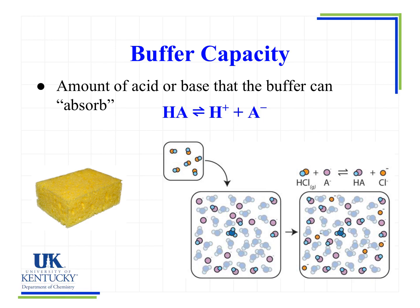Buffers can only do so much, and we have something called buffer capacity. Think of it like a sponge on the counter — you pour a little water on it and it soaks it up, and more and more, until at some point the sponge cannot absorb any more water, and if you pour more after that, it just runs all over the counter. There is a limit to what a buffer can do. If a system gets so overwhelmed, it can no longer function as a buffer. It's meant to maintain pH within a reasonable concentration of added acid or base, but it can only go so far.